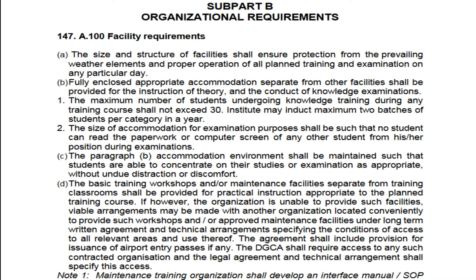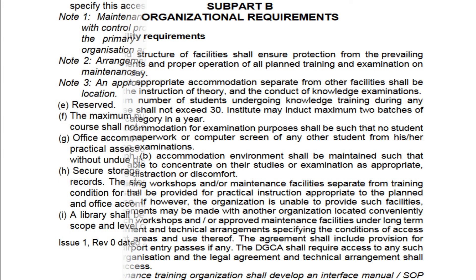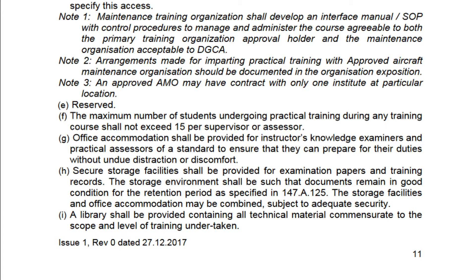If the organization does not have proper practical facilities, it can make a long-term agreement with another approved maintenance organization so students can complete their practical training there. DGCA will have full permission to inspect the contractor organization as well. A proper legal agreement will be made, including provision for airport entry passes for students. Note that an approved AMO may have a contract with only one institute at a particular location.